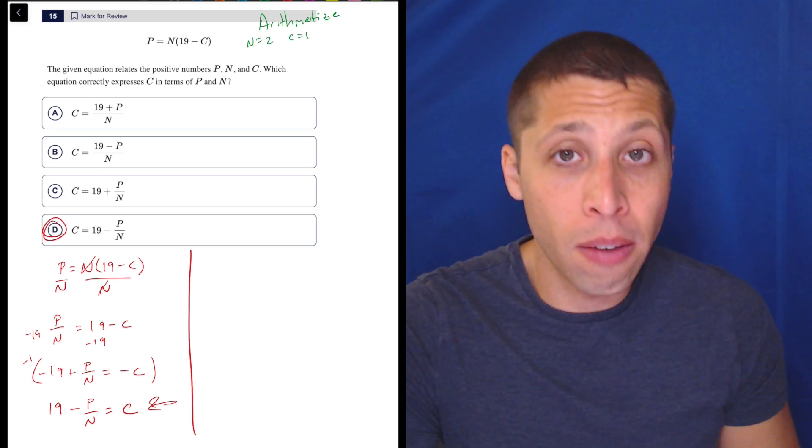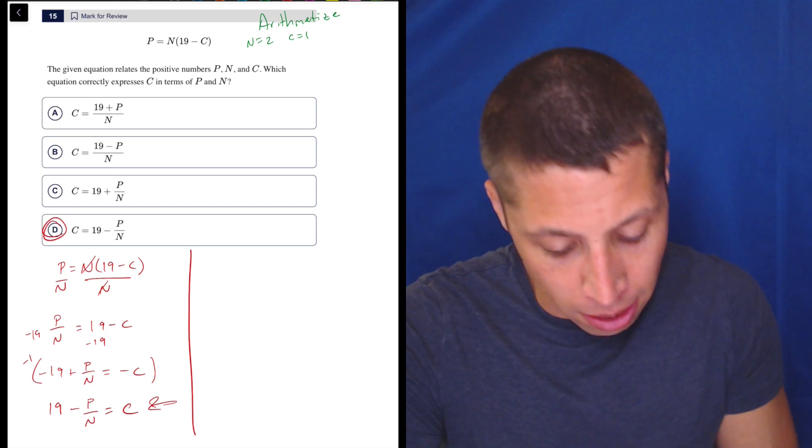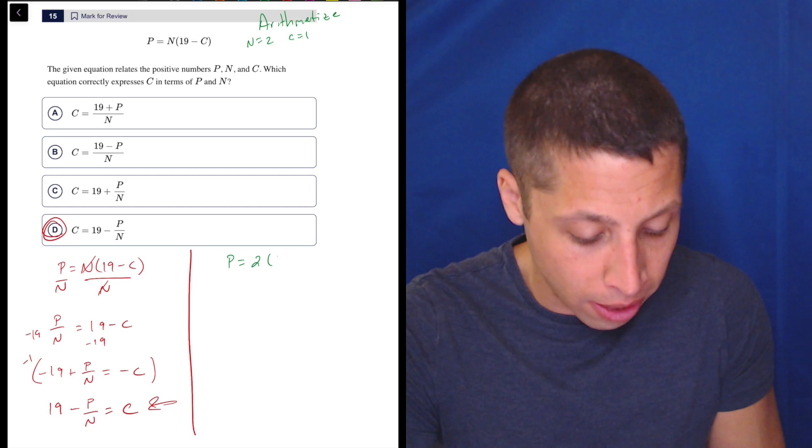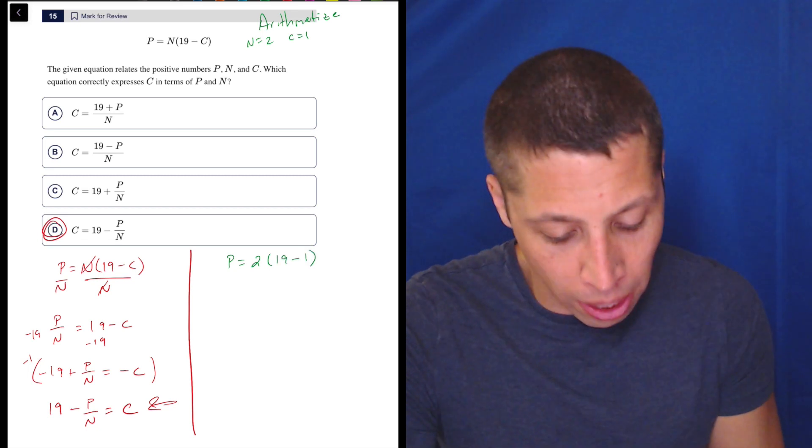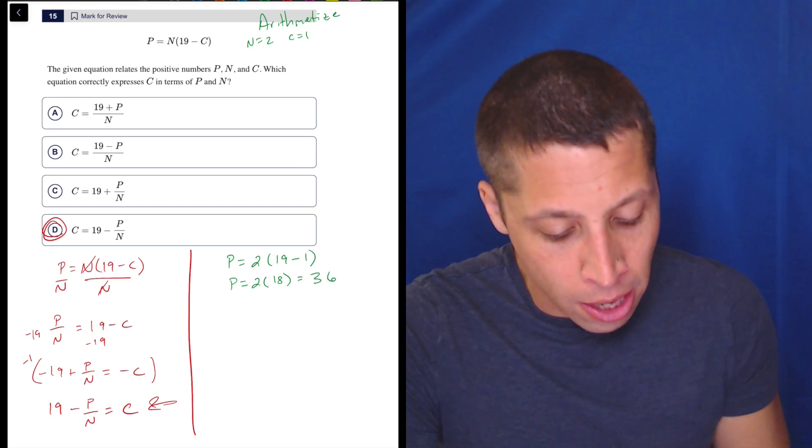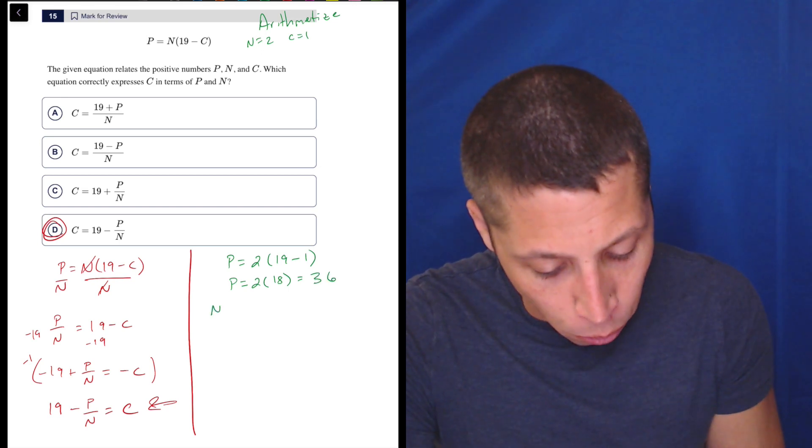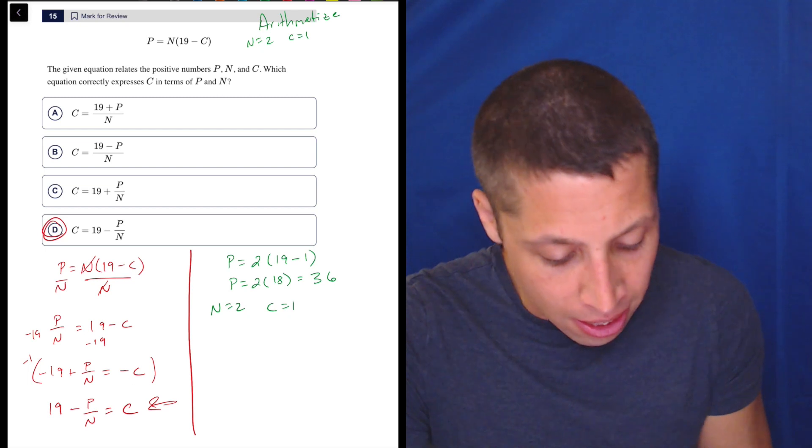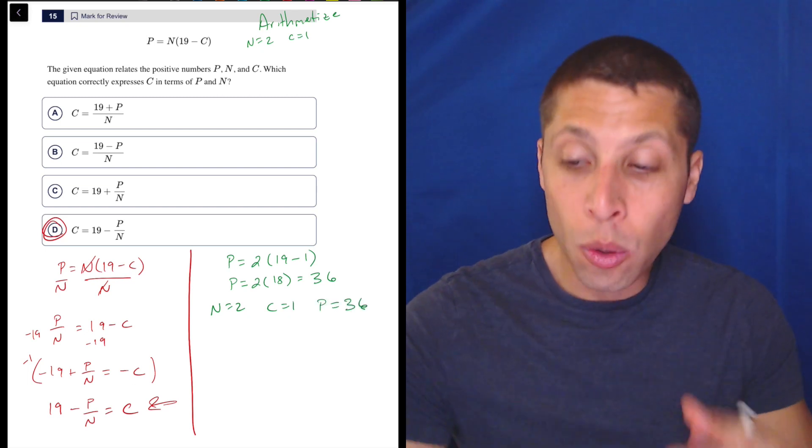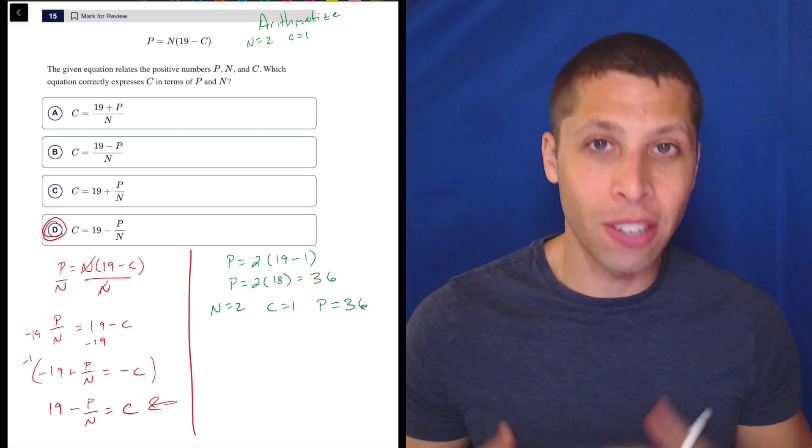So I'm going to say that N is equal to two and C is equal to one. And what that's going to let me do is solve this original equation. So P, I'm going to put it down here, is now going to be N, well, that's two times 19 minus one. Now this is just arithmetic. So two times 18 is 36. So now I have values for N, C, and P.